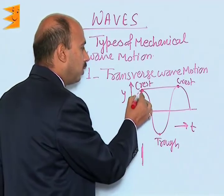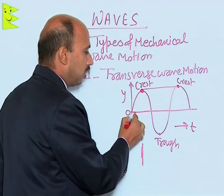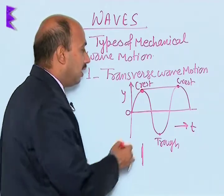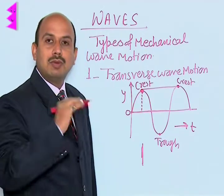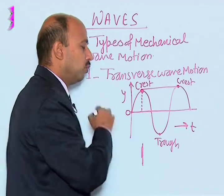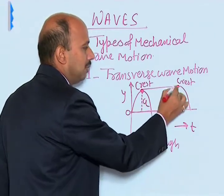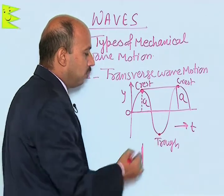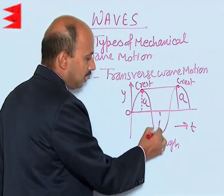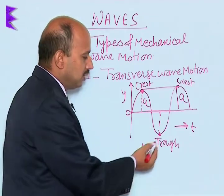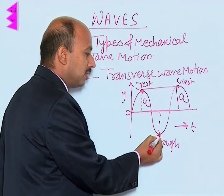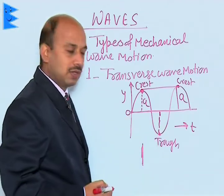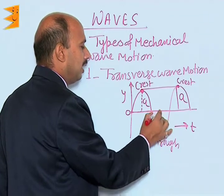The crest is the portion of the wave temporarily above the normal rest position of the particle. The center of the crest represents the maximum displacement of the particle from its mean position, which is known as amplitude. Similarly, the trough is the portion of the medium temporarily at the maximum downward position, and the center of the trough also has displacement equal to amplitude but taken as negative amplitude.